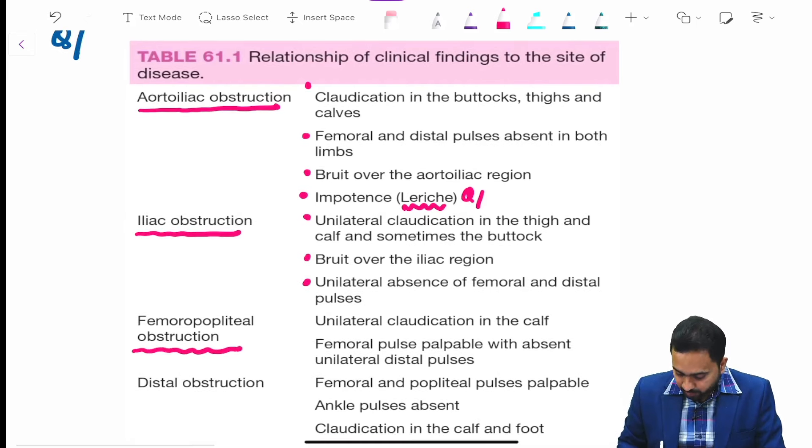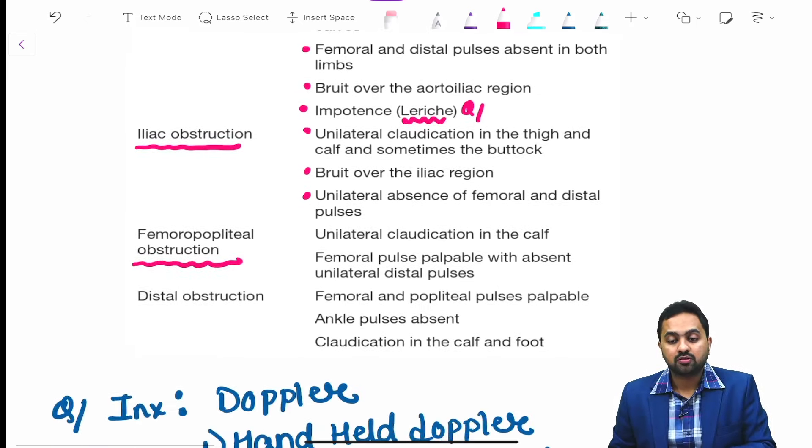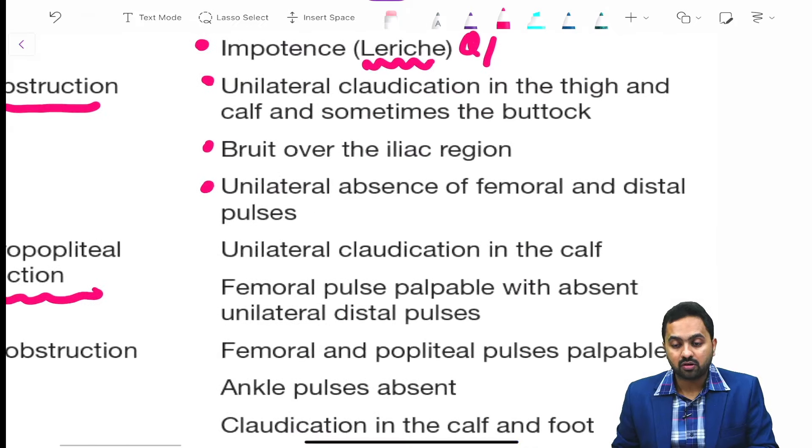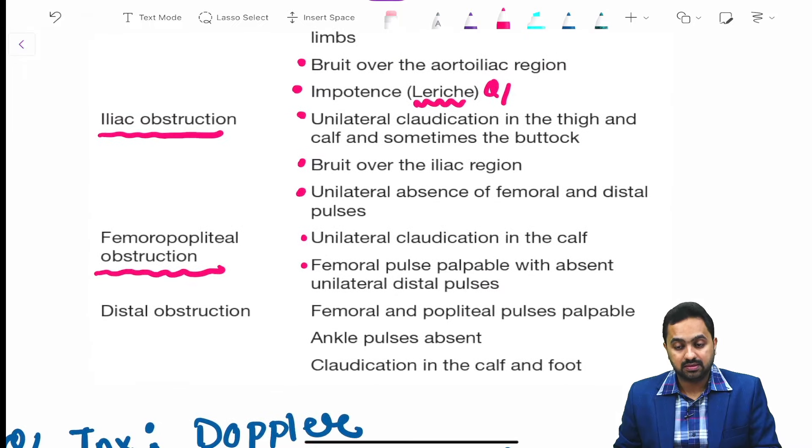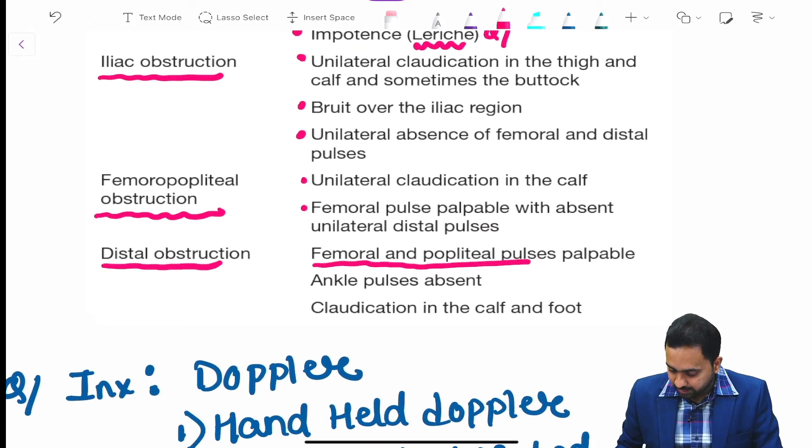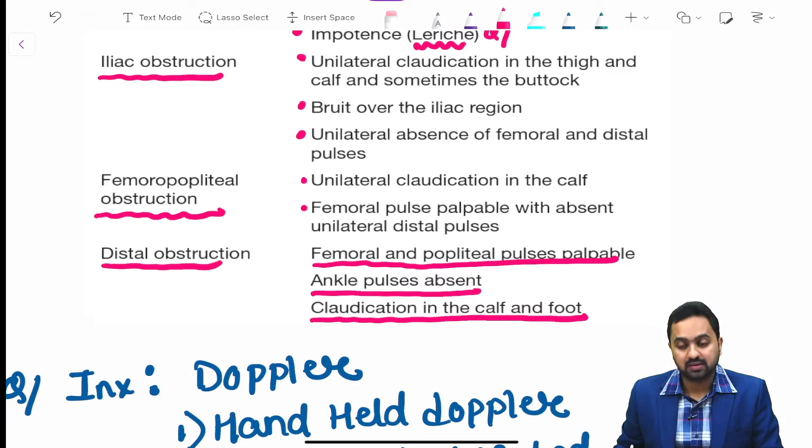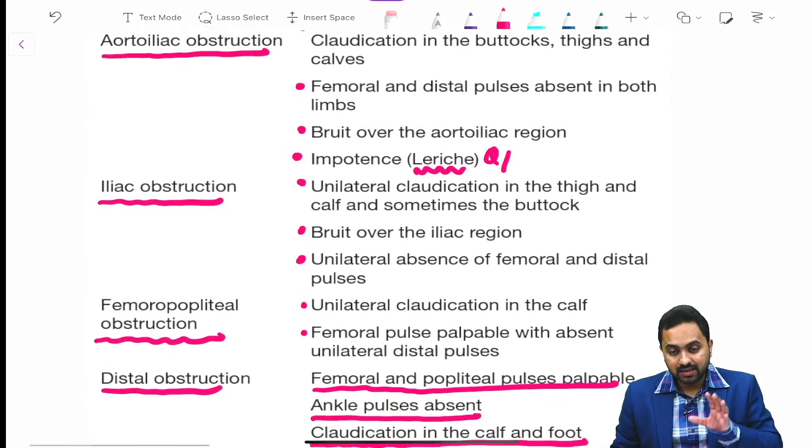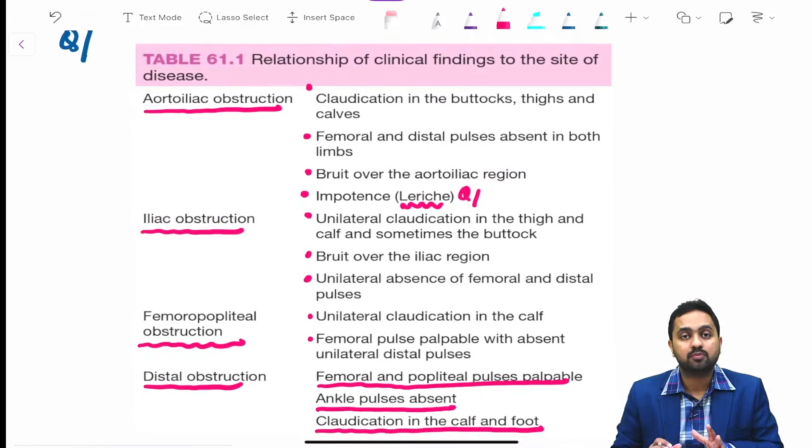Bruit over the iliac region and unilateral absence of femoral and distal pulses. In femoral-popliteal obstruction, unilateral claudication in calf, femoral pulse palpable with absent distal pulses. In distal obstruction, femoral and popliteal pulse palpable, ankle pulses absent and claudication in calf and foot. This table will help you solve clinical scenarios on the basis of the site of obstruction.